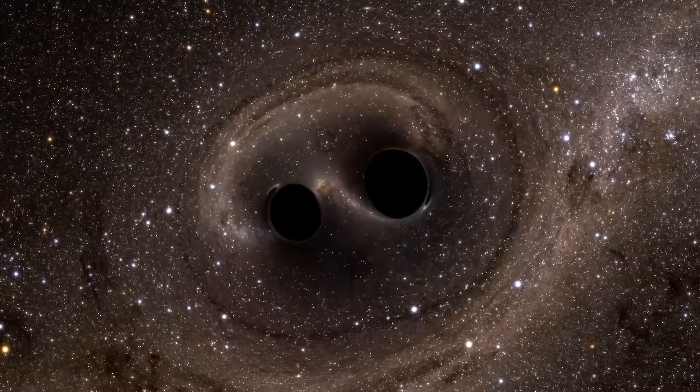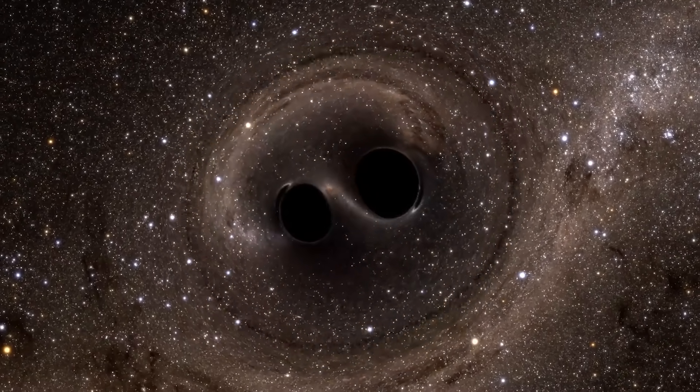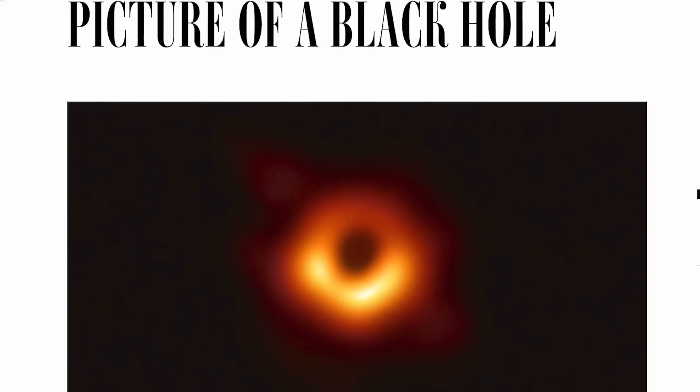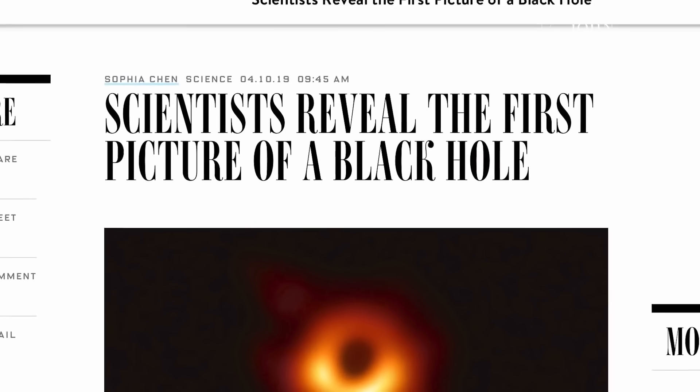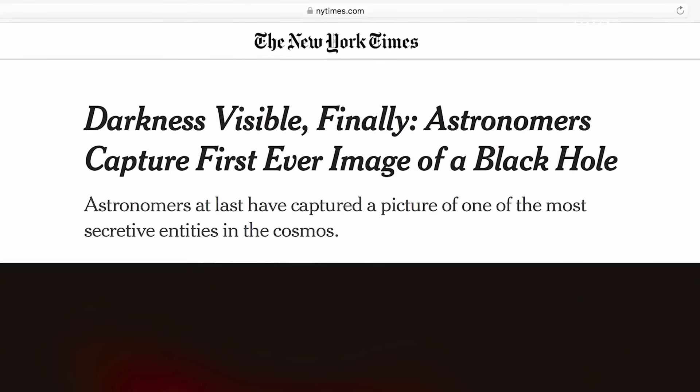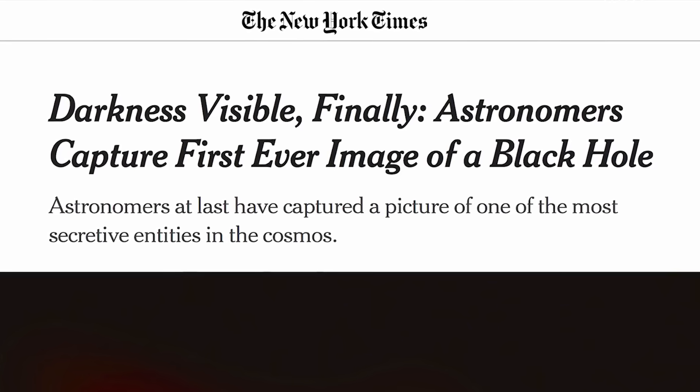When two galaxies merged to form the Milky Way, it most likely came about as a result of the merging of two black holes. It is famously difficult to find black holes. Typically, the only way to determine one's presence is to observe the impacts it has on their environment. But it doesn't end there.